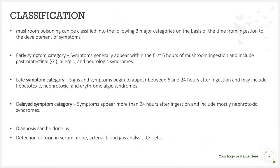Mushroom poisoning can be classified into three major categories based on the time from ingestion to the development of symptoms. In the early symptom category, symptoms generally appear within six hours of mushroom ingestion and include GI, allergic, or neurological syndromes. In the late symptom category, signs and symptoms begin to appear between six to 24 hours after ingestion and may include hepatotoxic, nephrotoxic, and erythromyalgic syndromes.